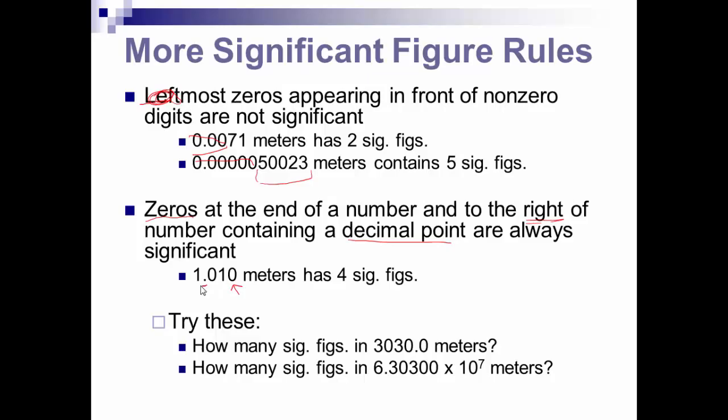The zeros at the other end, if they are to the right of the decimal point, then they are significant. So while leading zeros are not significant, this zero here is significant because here's our decimal point. So let's take a look here for a minute. How many sig figs does this one have? Think about it for a moment. Think about the rules that we've talked about so far.